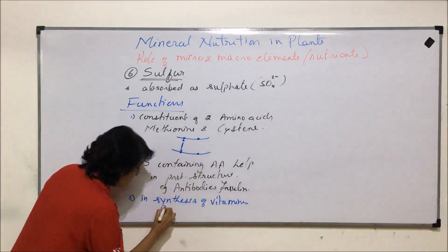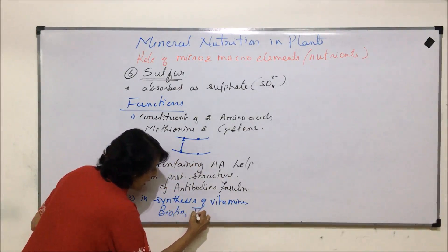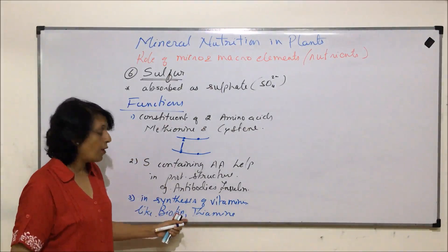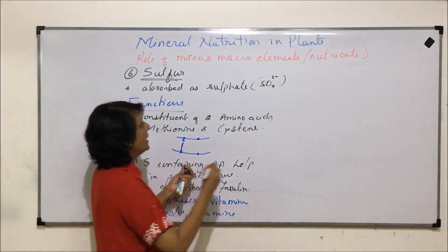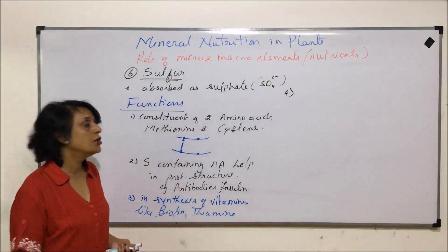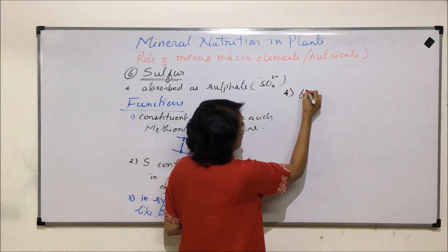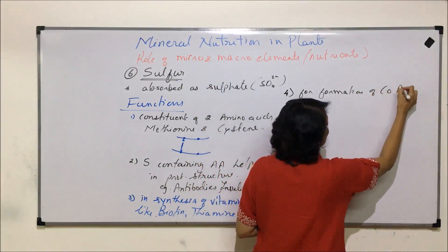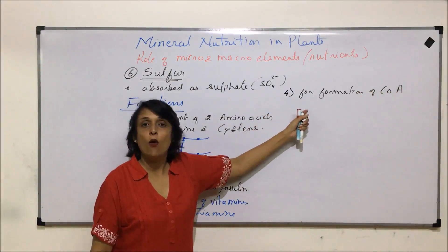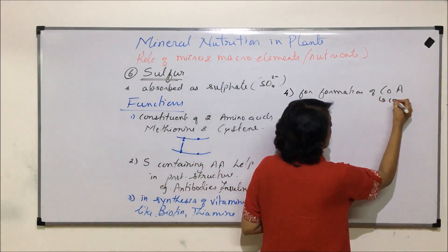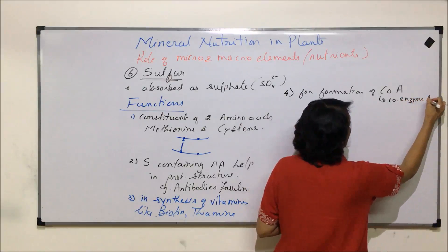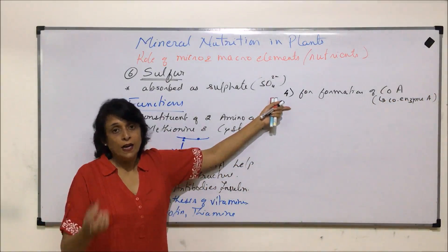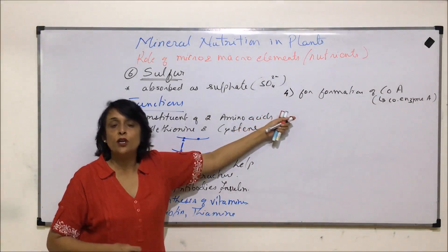The next important role of sulfur is in the synthesis of certain vitamins, like biotin and thiamine. It is also required for formation of coenzyme A, which is essential for various reactions where it acts as an acceptor or binds with certain molecules.